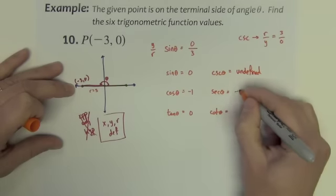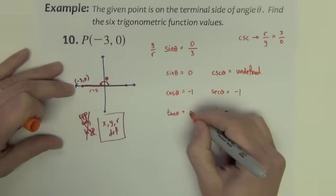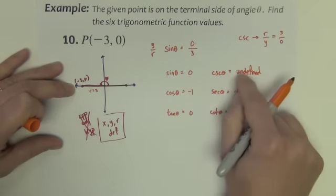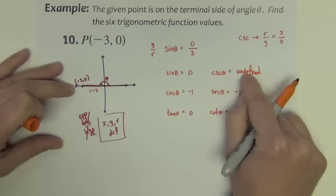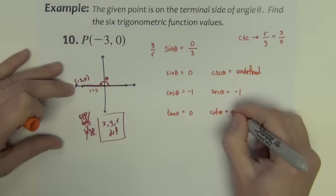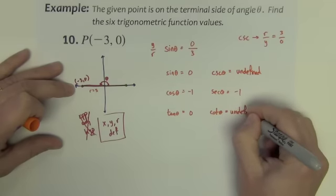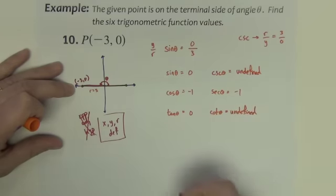Secant is cosine's reciprocal. Cotangent is tangent's reciprocal. And just like up here, what ended up being the reciprocal of 0 is undefined. Same thing down here. And we've got it.